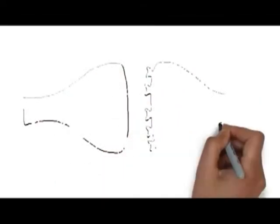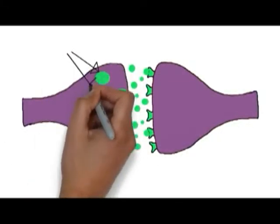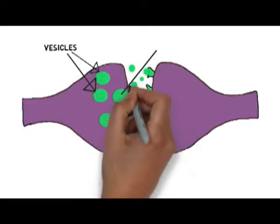The neuron where the signal is initiated is called the presynaptic neuron, while the neuron that receives the signal is called the postsynaptic neuron. In the presynaptic neuron, there are chemical signals called neurotransmitters that are packaged into small sacs called vesicles. Each vesicle can contain thousands of neurotransmitter molecules.